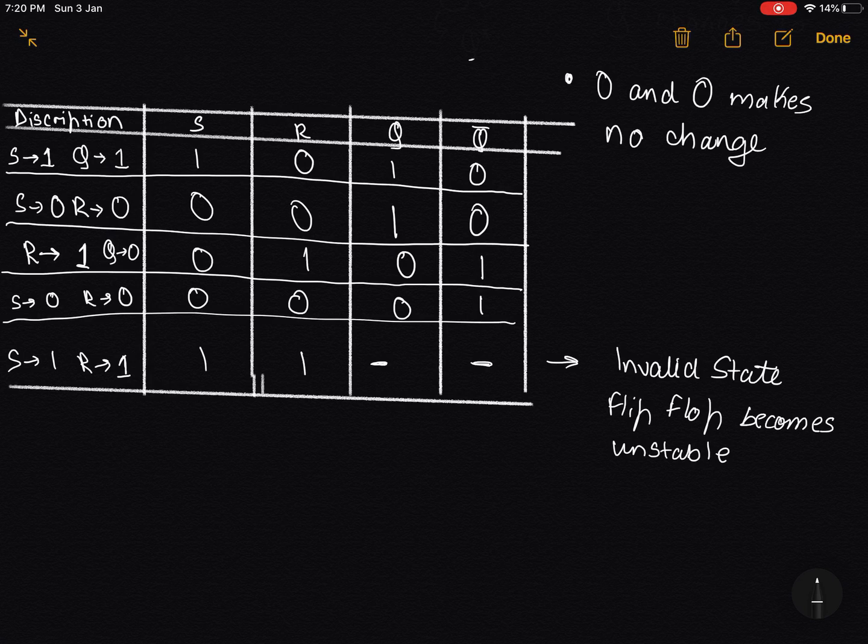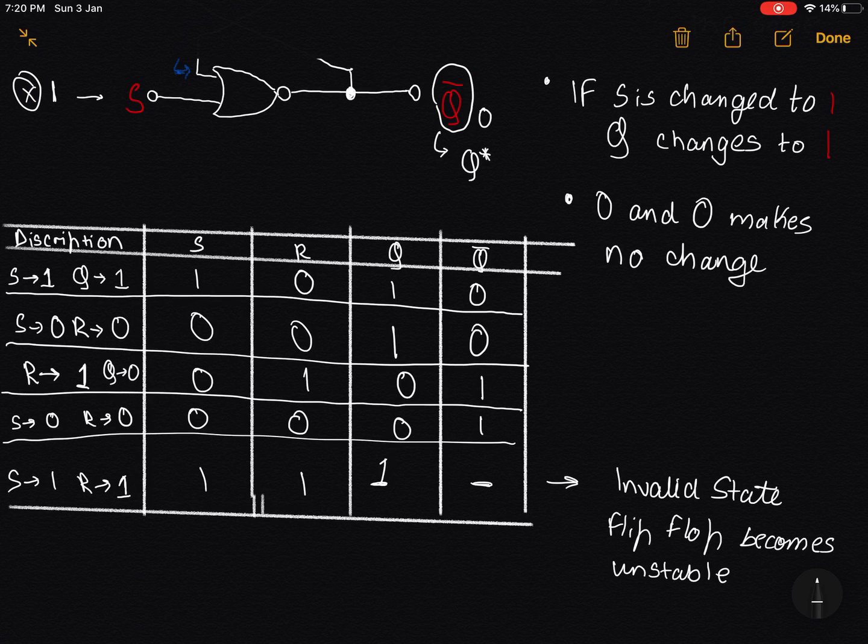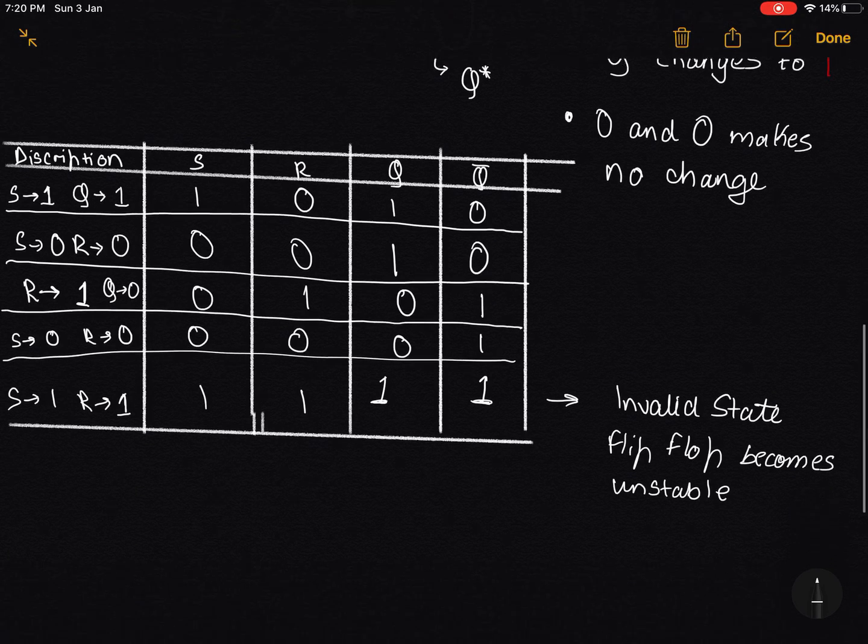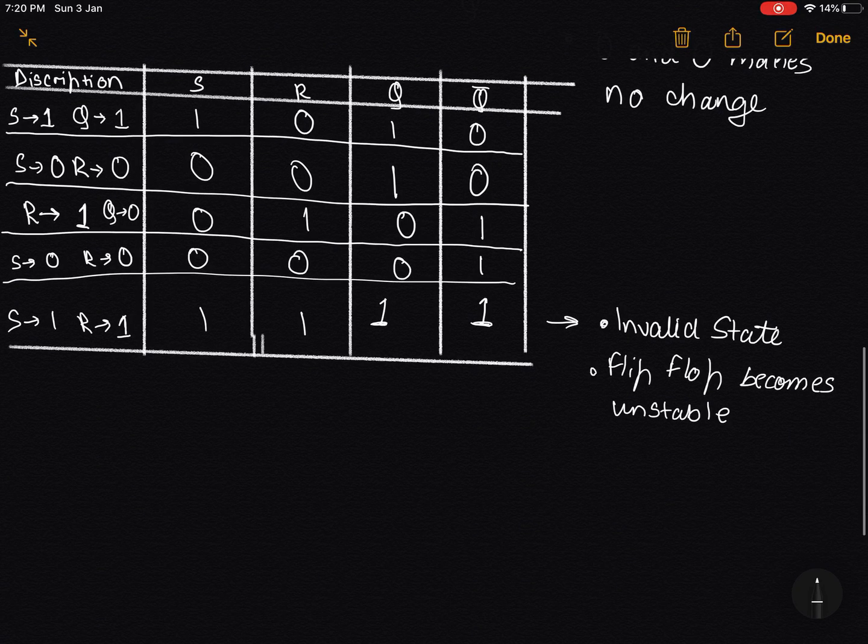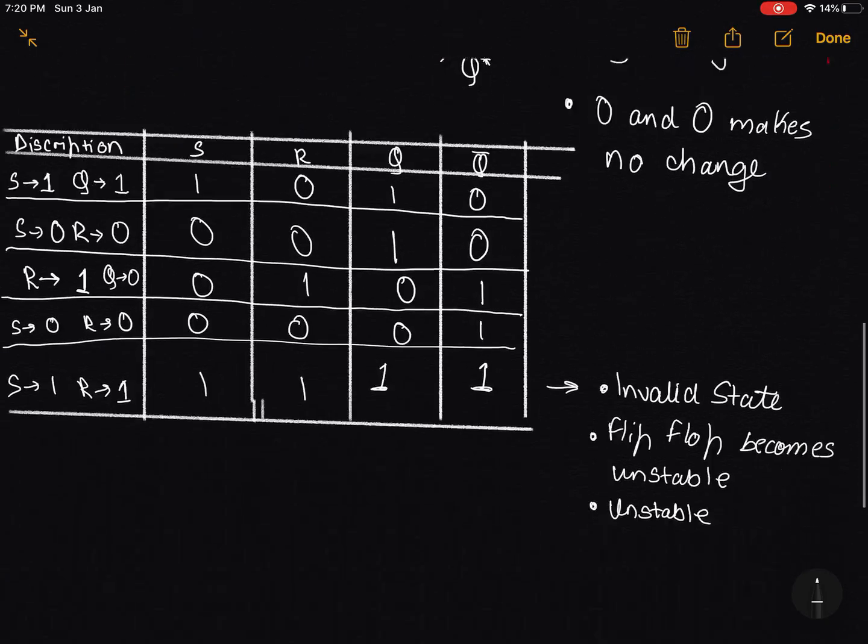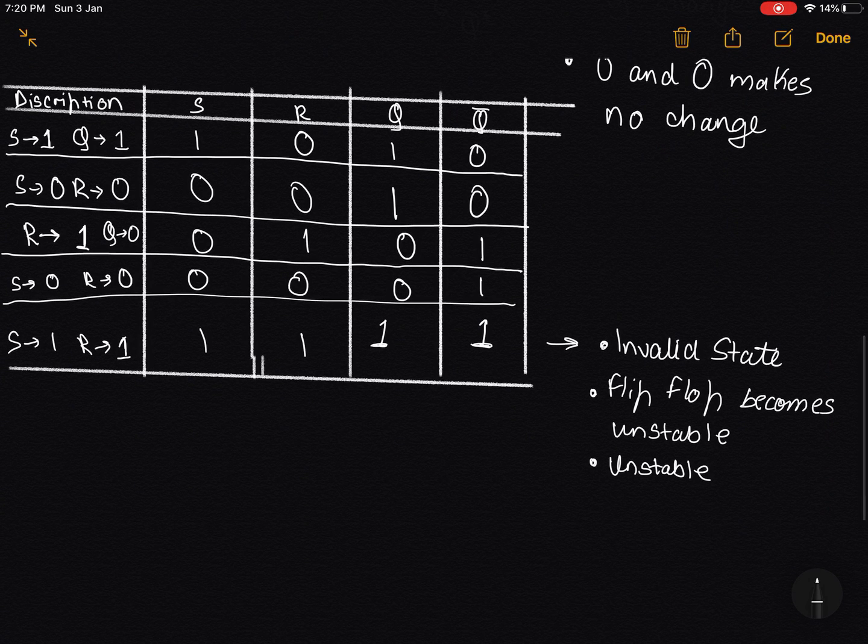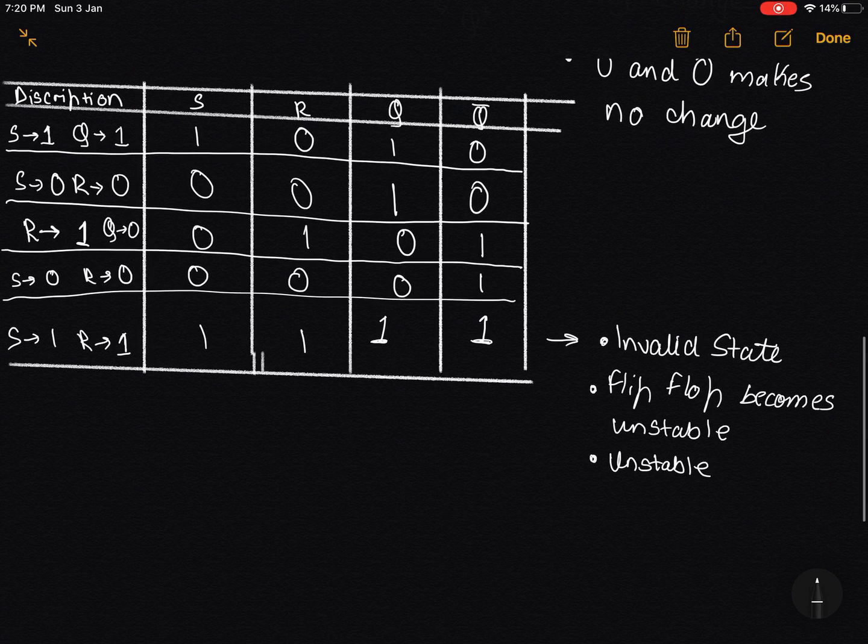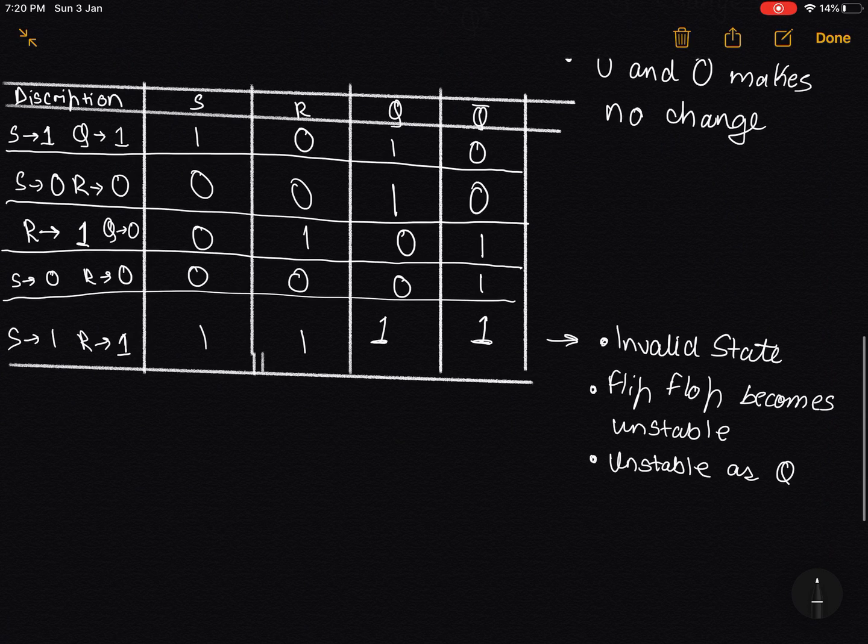When S is 1 and R is also 1, a flip-flop will become unstable. Invalid state. If you would actually check this out, having 1 and 1 would give you outputs of 1 and 1. But we do know that Q and Q complement cannot be the same. So that is the reason this is an unstable state. This is one of the major disadvantages of using S and R flip-flops, that we do have an invalid state in this.